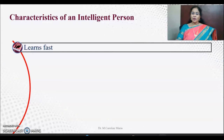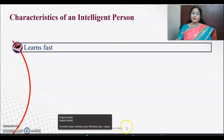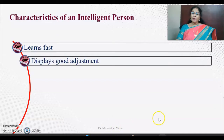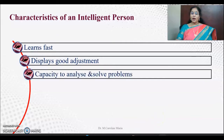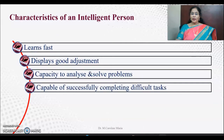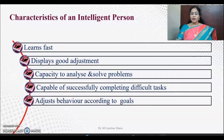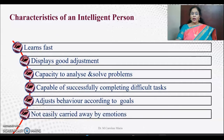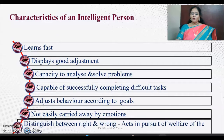What are the characteristics of intelligent persons? Intelligent persons will learn fast, display good adjustment, and have the capacity to analyze and solve problems. They are capable of successfully completing difficult tasks. They have very good adjustment behavior according to their goal and are not easily carried away by emotions because they have good emotional balance. They can distinguish between right and wrong, quickly find out what is correct and what is wrong, and they act in pursuit of the welfare of society.